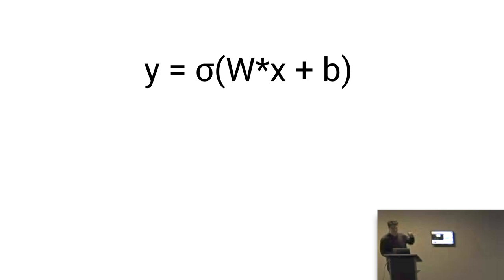When you start learning about deep learning, you're going to see an equation like this and lots of pictures about how this is a simulation or model of neurons in the brain. I think you should forget all of that — just throw it out, delete it, forget it, it's worthless. Forget this formula; it's not that special.